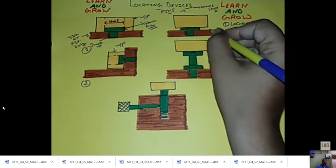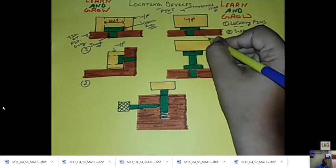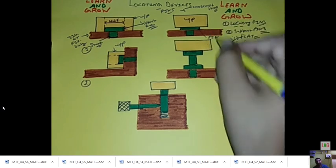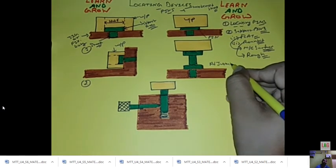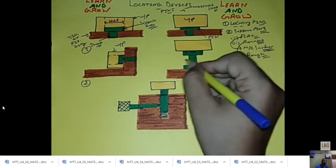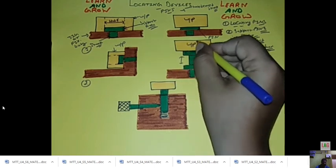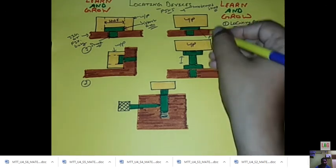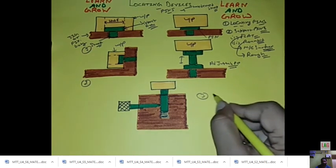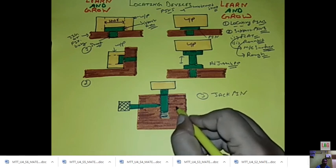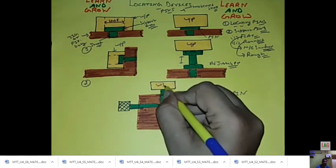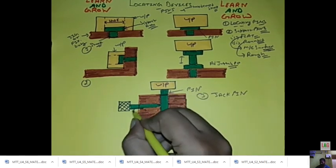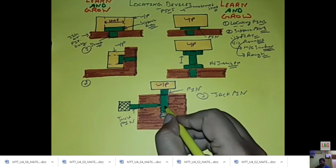Support pins are of two types: fixed type and adjustable type. The fixed type locating pin is press-fitted into the body. The adjustable type uses a nut and bolt mechanism so the pin position can be adjusted according to requirement.